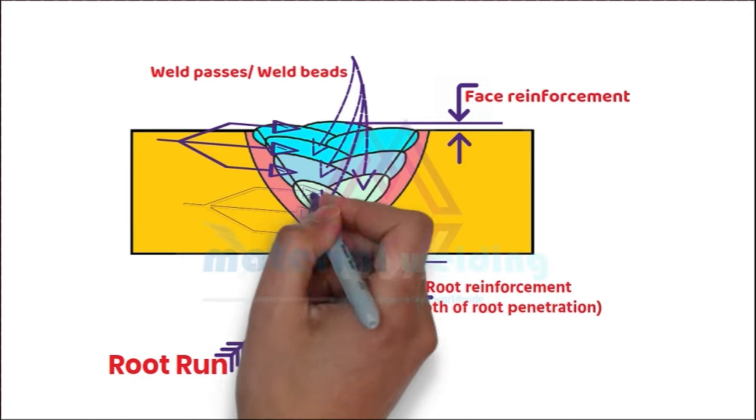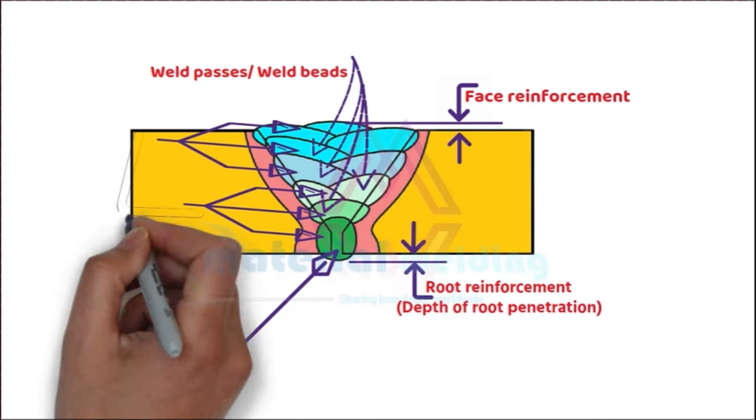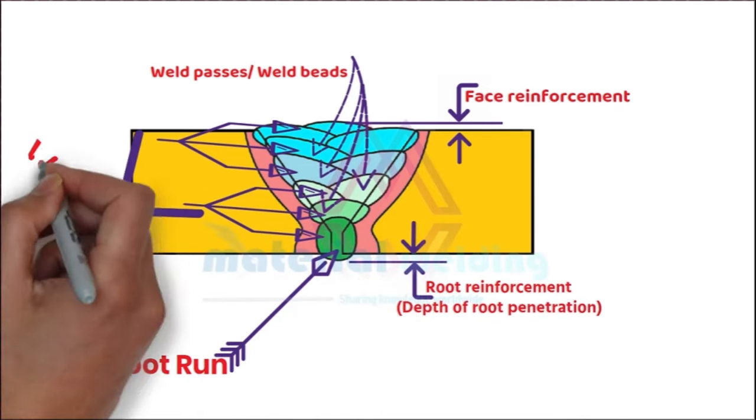Multi-passes welded in the same level make a weld layer. A weld layer can have either a single pass or multi-pass.